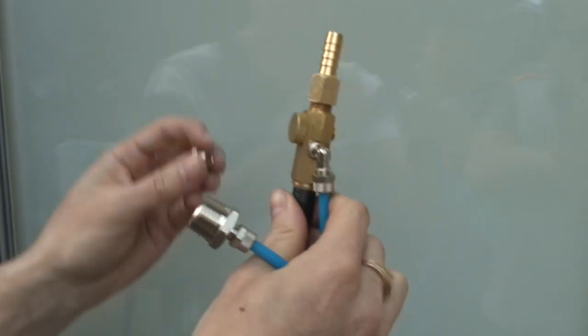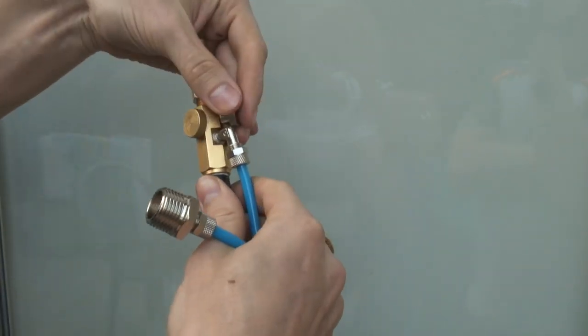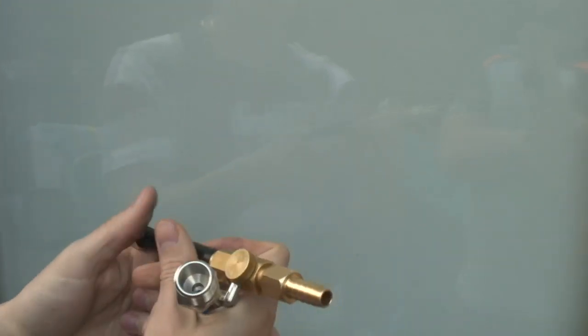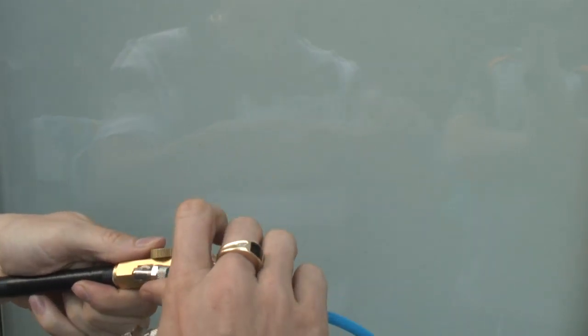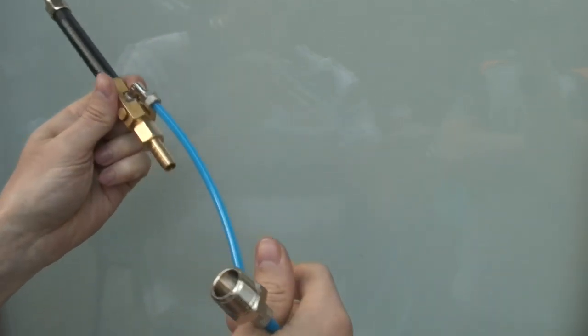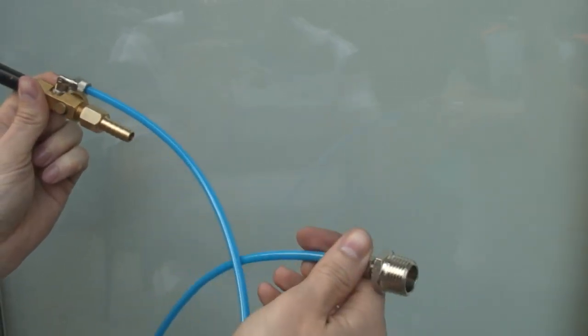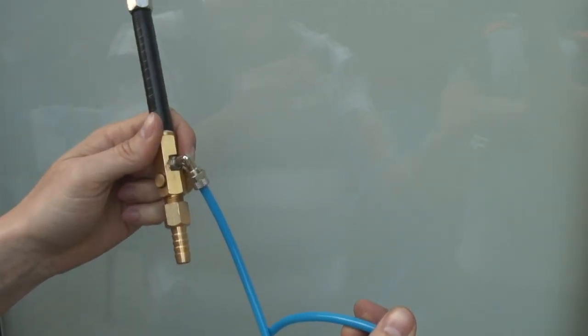Then just put this plug in there and use it as a torch. Or you can put this thing in and mix gas together and it'll be a welder for you.